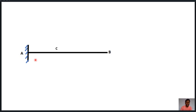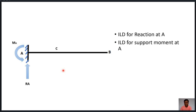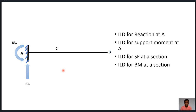In a cantilever beam, one end is always fixed and the other end is always free. The fixed end offers a vertical reaction at A and a support moment MA. We generally neglect the horizontal reaction at A because the beam is subjected to vertical loads. We will draw influence line diagrams first for reaction at A, then for support moment at A, then for shear force at a section, and then for bending moment at a section.